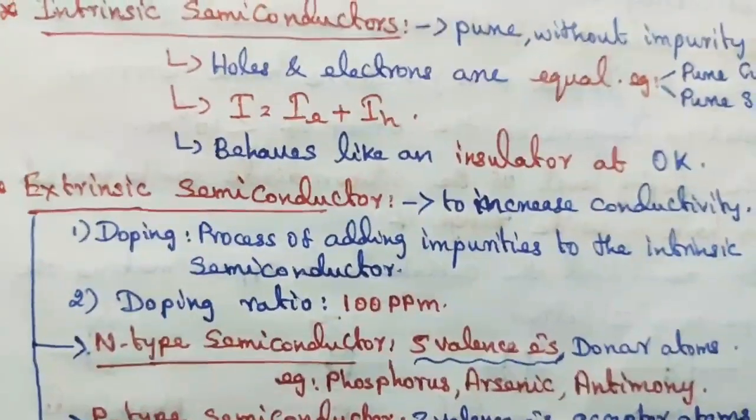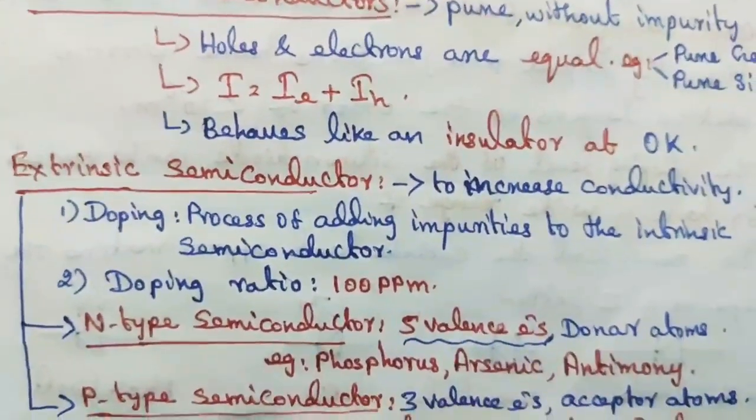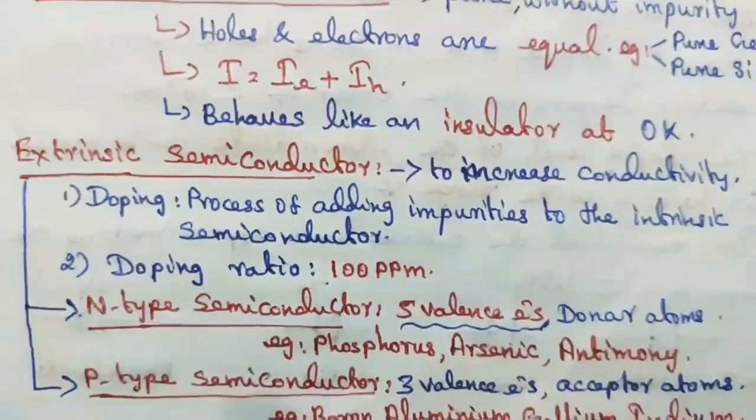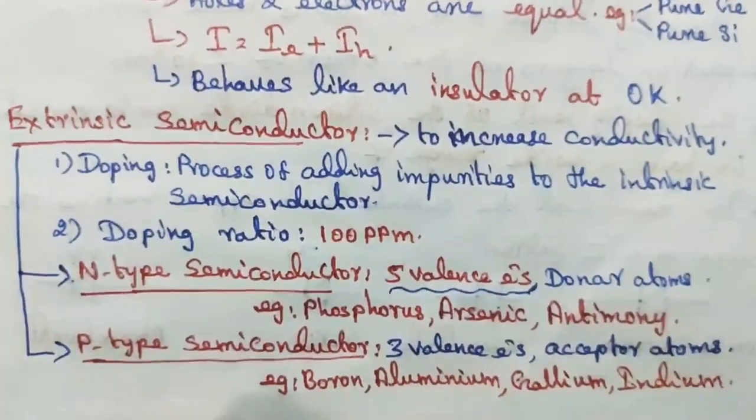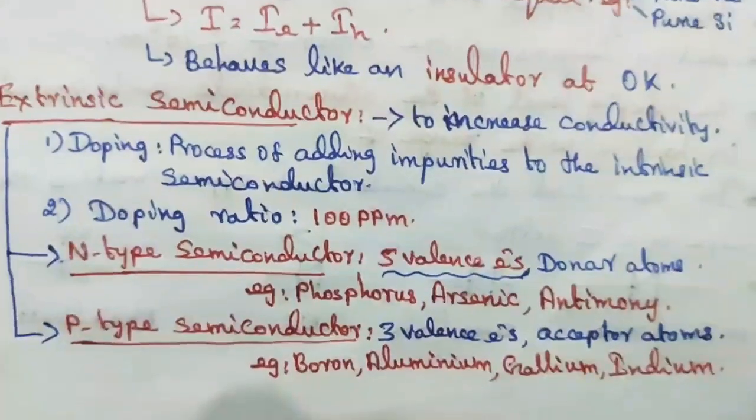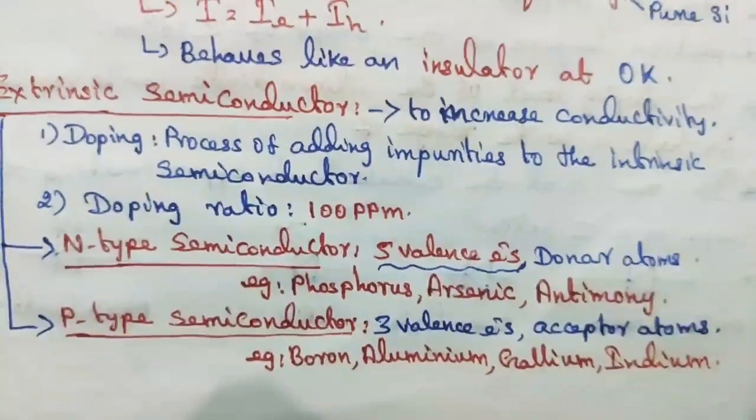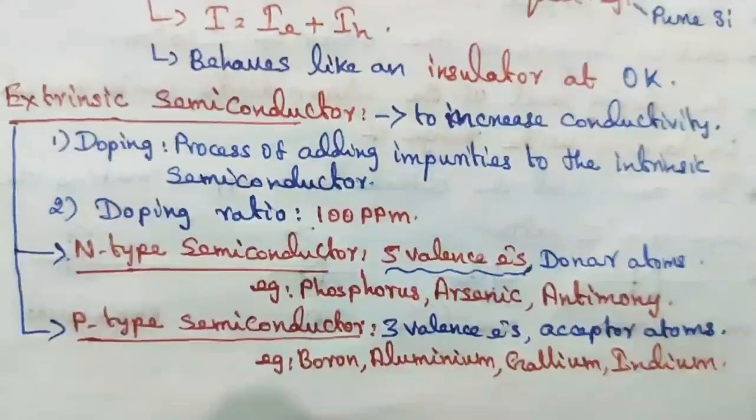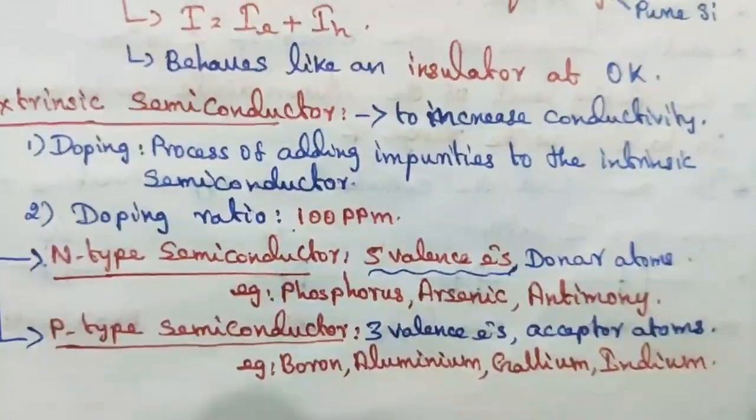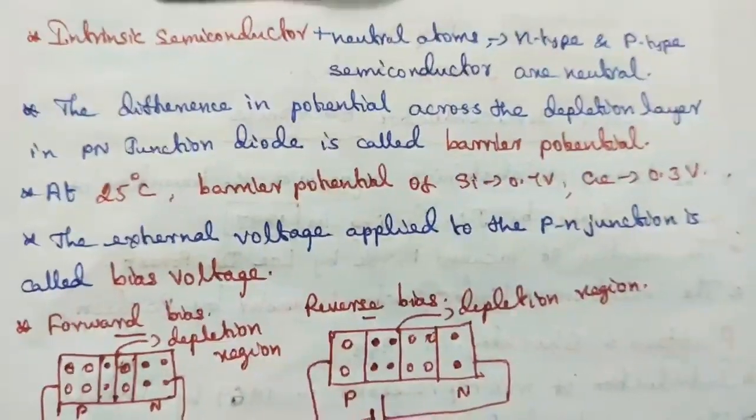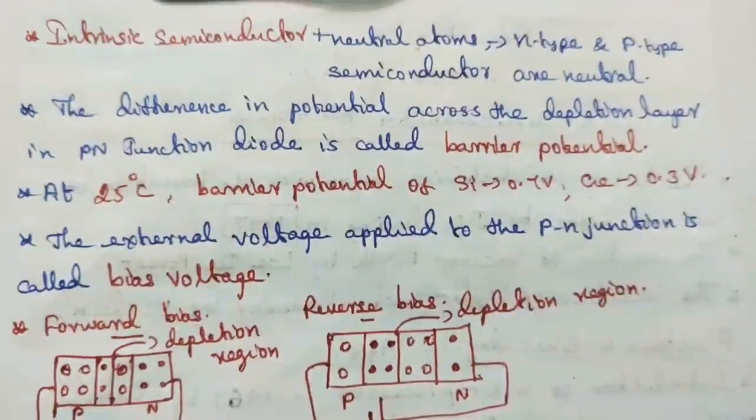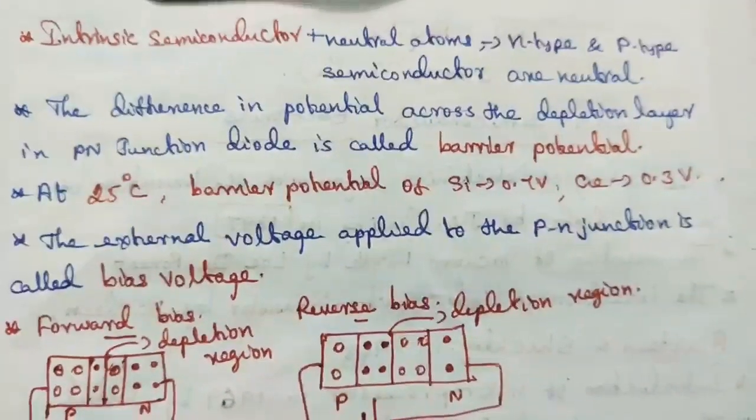In n-type semiconductor, there are 5 valence electrons, which are donor atoms. Examples are phosphorus, arsenic, and antimony. In p-type semiconductor, there are 3 valence electrons, which are acceptor atoms. Examples are boron, aluminum, gallium, and indium. The combination of intrinsic semiconductor and neutral atoms: if we add neutral atoms to the intrinsic semiconductor, there are n-type and p-type semiconductors which are neutral.